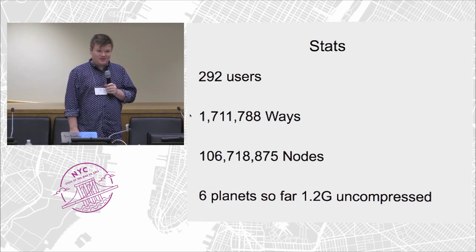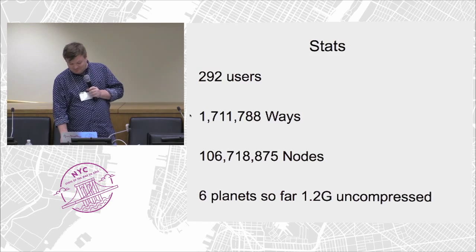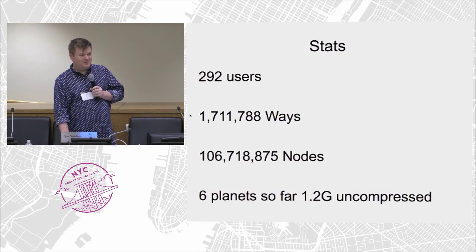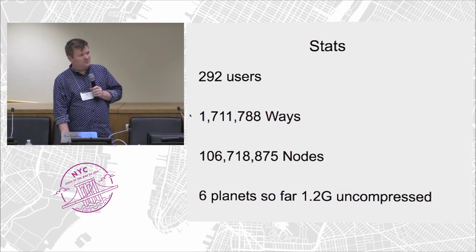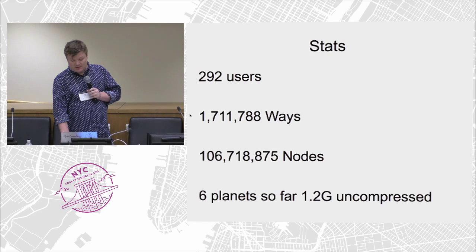That's 292 users, so quite small. Hopefully everyone here will load up OHM, sign up, and start contributing. There's over a million ways and 106 nodes. We've got six planet dumps so far — we aim to do one each week, although previously most were each month. Each one is 1.2 gigabytes compressed.